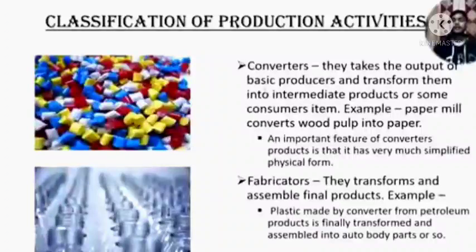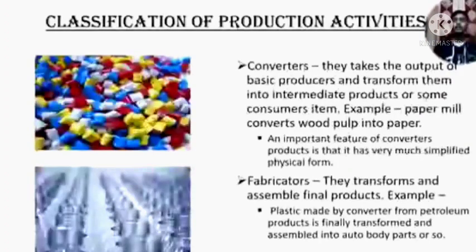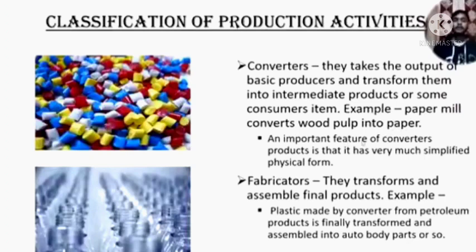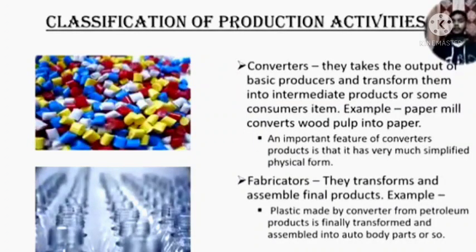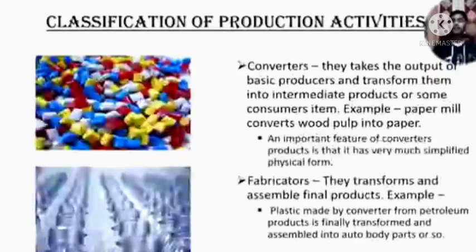The next one is converters. Converters take the output of basic producers and transform them into intermediate products or some consumer items — for example, a paper mill converts wood pulp into paper. An important feature of converters' products is that it has a very much simplified physical form. In this image, we can see it is the basic converters' product of plastic.